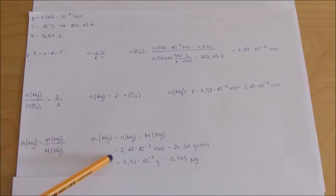And the mass of magnesium is 7.73 × 10^-7 gram or 0.773 nanogram.